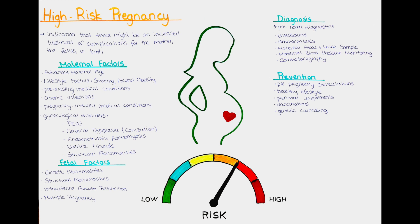We can also do an amniocentesis, where we obtain a sample from the amniotic fluid to test the baby for chromosomal abnormalities. We can also take a blood and urine sample of the mother to check for gestational diabetes, pre-eclampsia, or other potential medical conditions. We also usually monitor the blood pressure of the mother, and with a cardiotocography, we can monitor the heart rate of the baby.